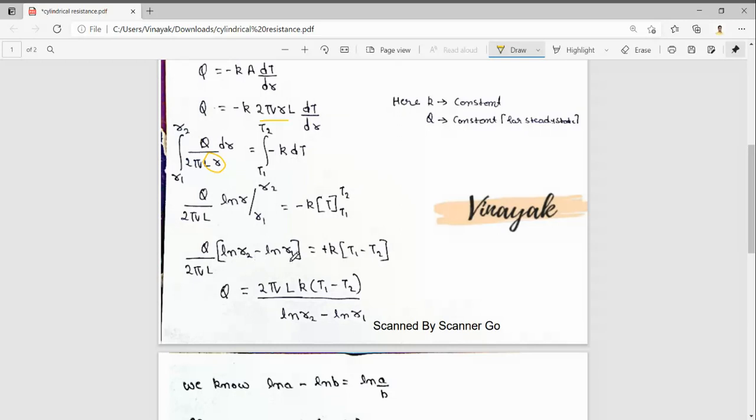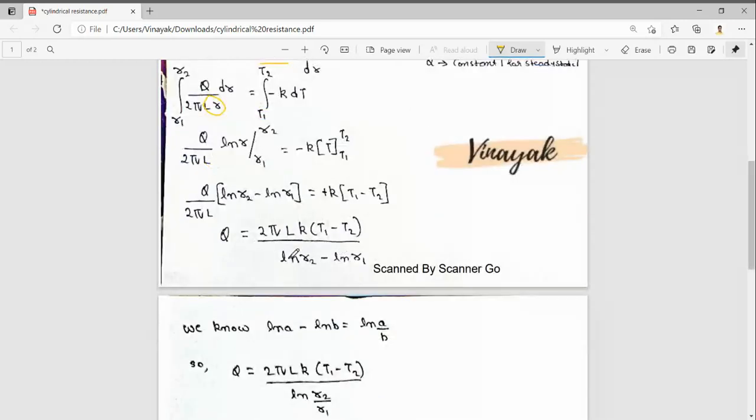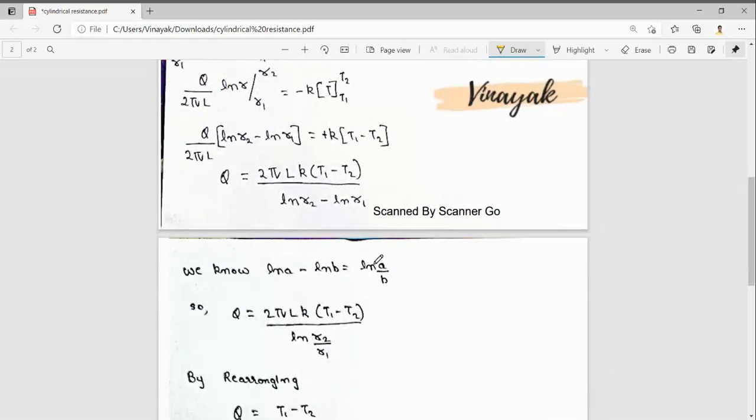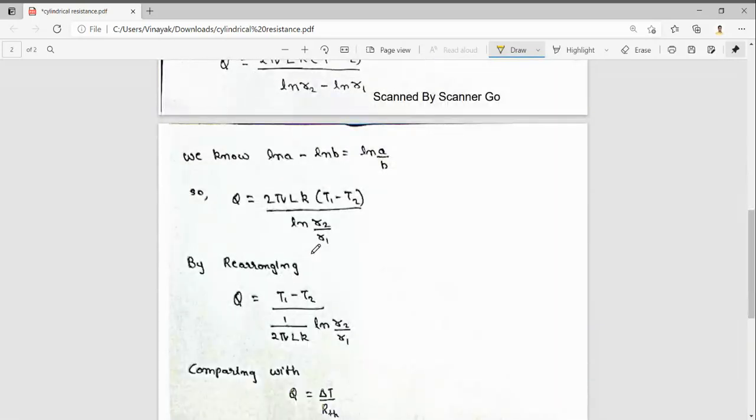By rearranging, Q equals 2πLK(T1 - T2)/(ln R2 - ln R1). We know that ln a - ln b is ln(a/b), so we can write ln R2 - ln R1 as ln(R2/R1).